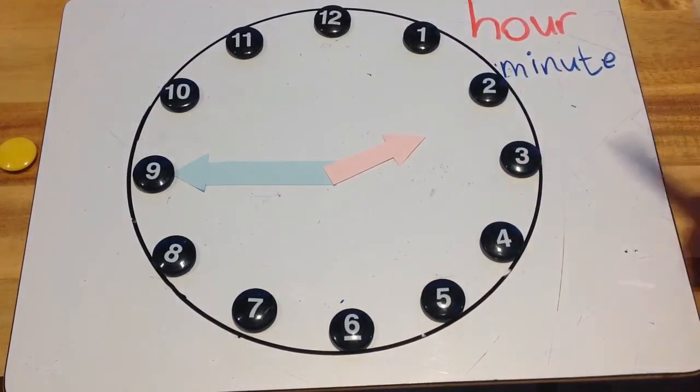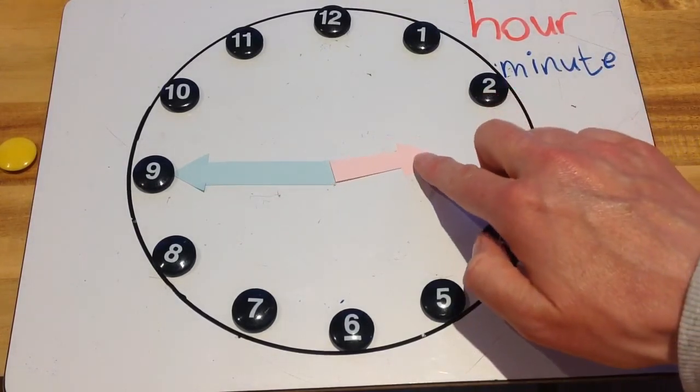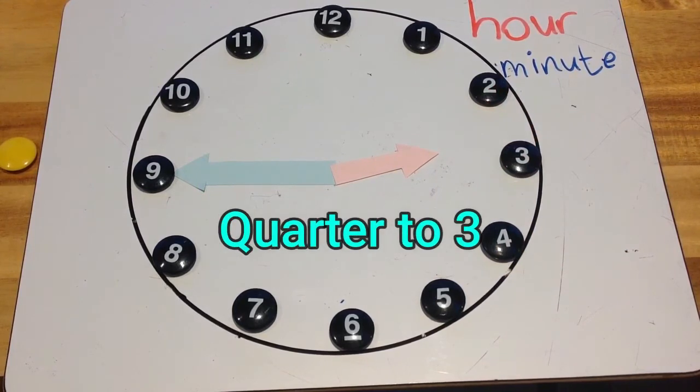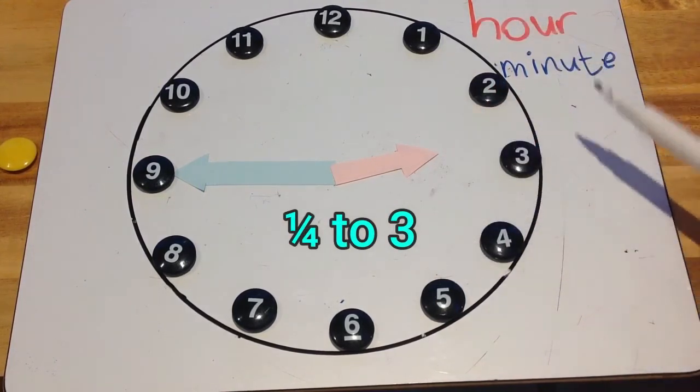That's called a quarter to. And this short little hand here will be heading towards the 3. So we can say it's a quarter to 3. It's heading towards the 3.